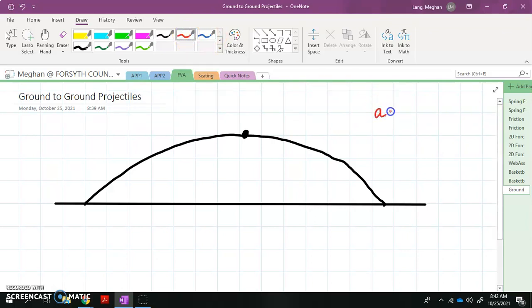So we know that the acceleration in our X direction for something that is moving through the air as a projectile is gonna be zero meters per second squared. So that means that the X component of our velocity is gonna be the same throughout the entire motion. So I would start here in the beginning with a velocity in the X direction.